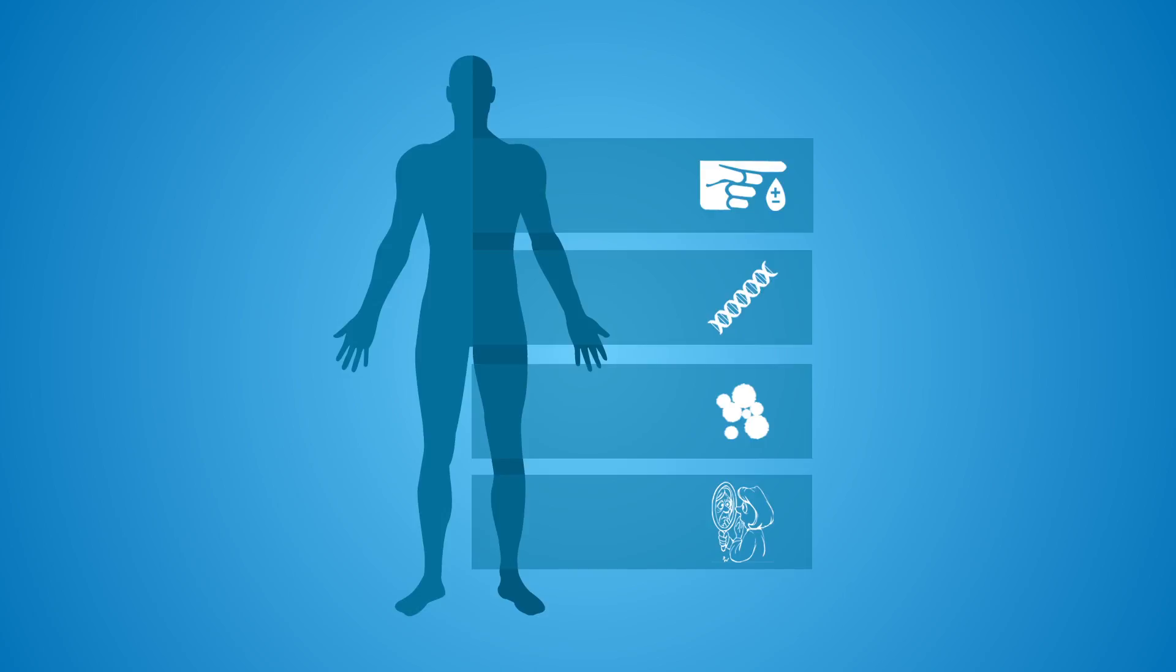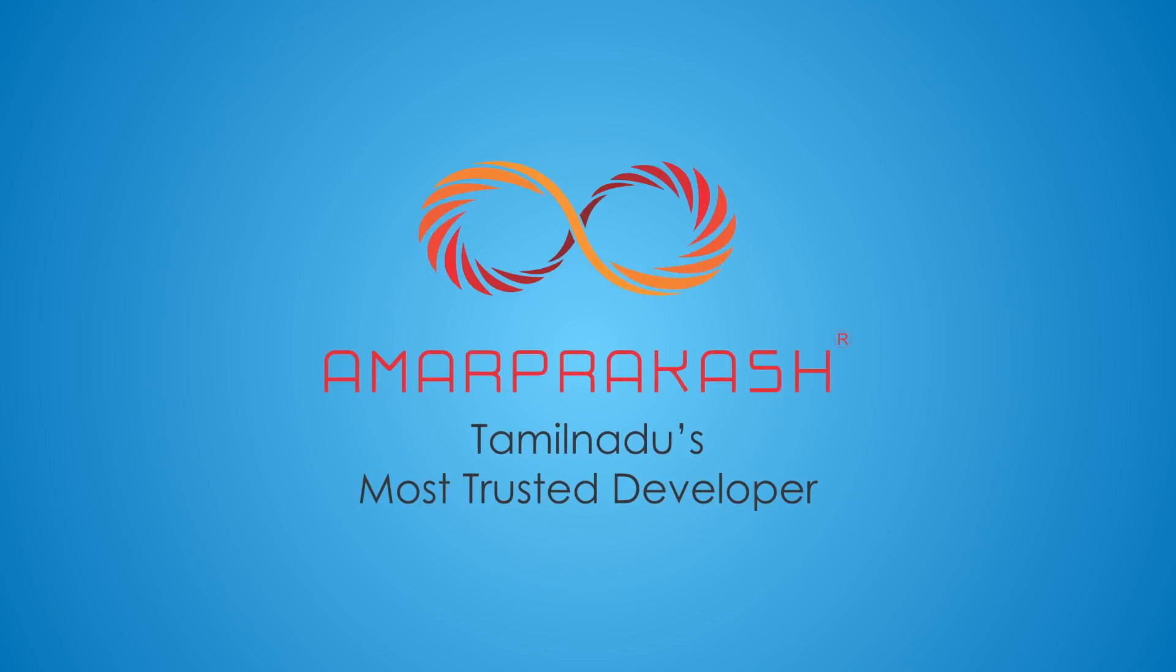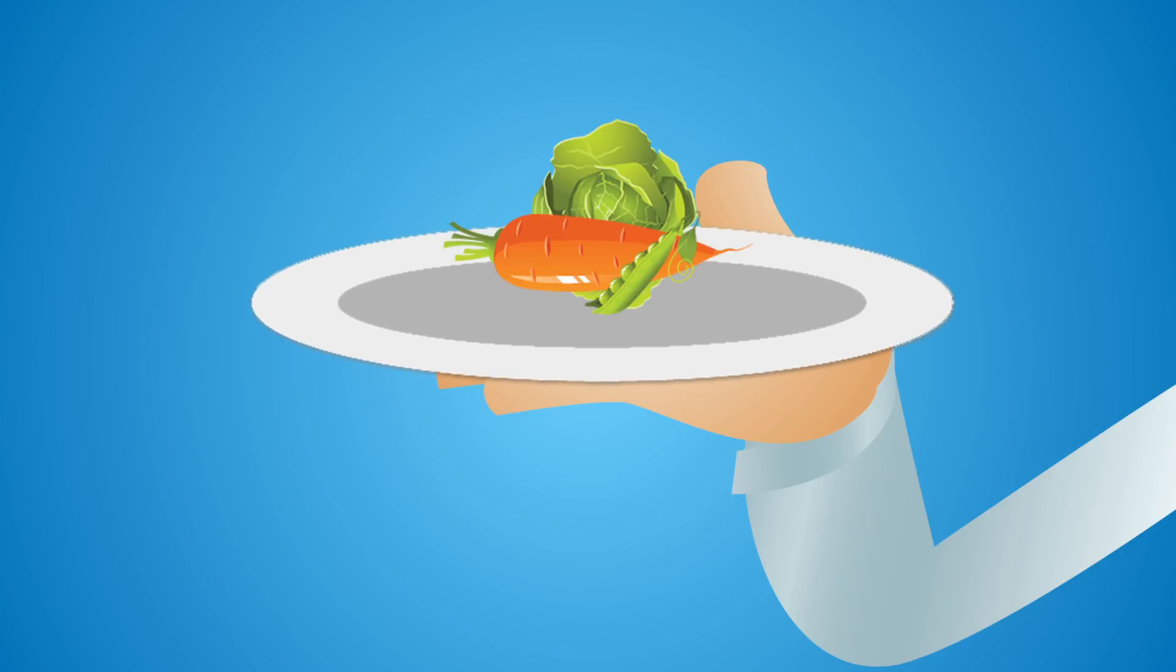We have a perfect solution to all your questions. OTG homes. OTG means organic terrace garden. Amar Prakash offers you homes with OTG and you can produce your own organic food at your home.